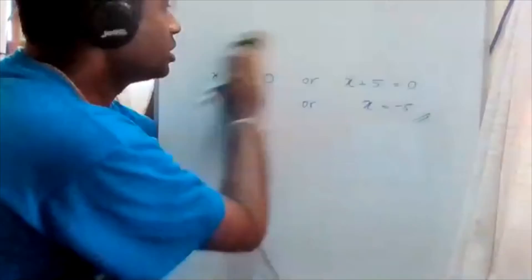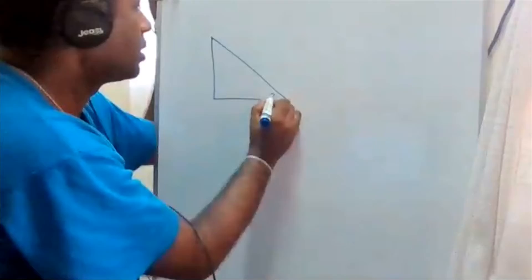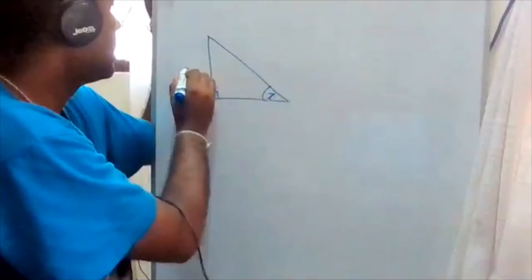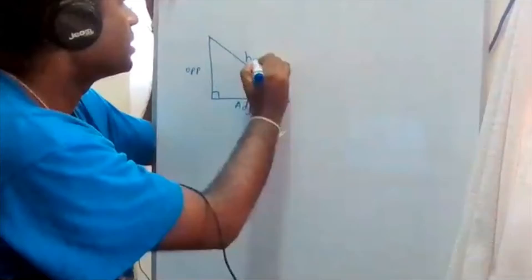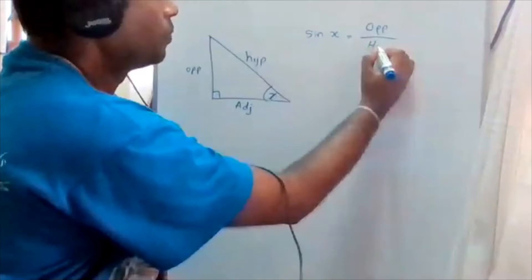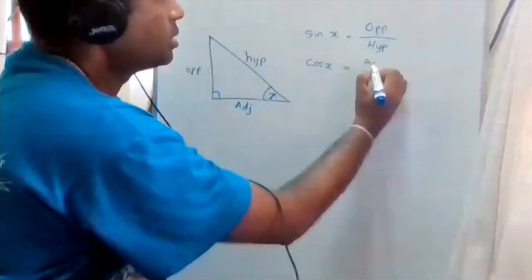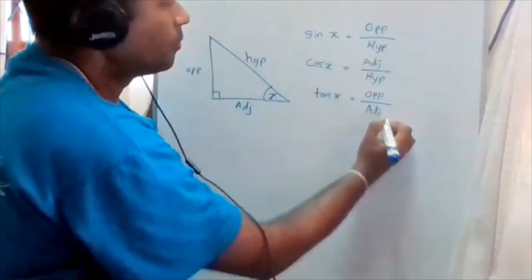Now let's address some important concepts regarding a right-angled triangle. If you take a right-angled triangle, you can identify the opposite side relative to angle x, the adjacent side, and the hypotenuse. Then: sin x equals opposite divided by hypotenuse, cos x equals adjacent divided by hypotenuse, and tan x equals opposite divided by adjacent.